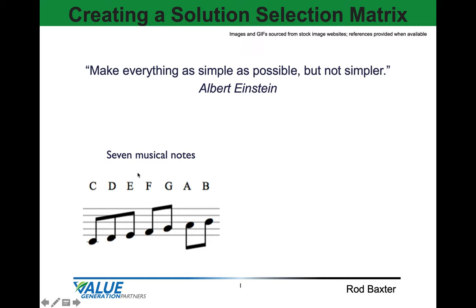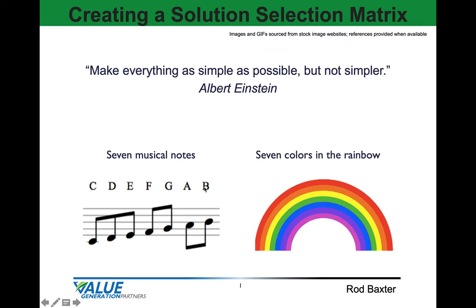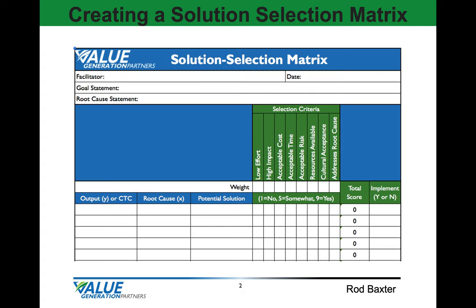Keeping things as simple as possible — there are seven musical notes. Think of your favorite musical artist and what they've been able to do with only seven musical notes. There are seven colors in the rainbow; consider your favorite painter and what that person has been able to do with those seven colors. The point is: let's keep it as simple as possible, but not simpler than that.